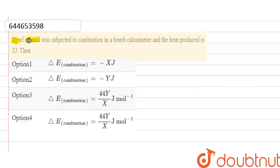X gram of ethanol was subjected to combustion in bomb calorimeter and the heat produced is Y joule. Then we have to find out internal energy change for the combustion reaction. First of all, the combustion reaction of ethanol...